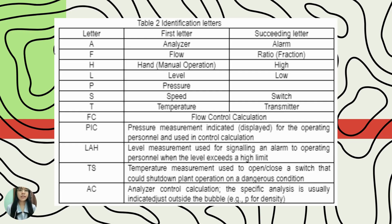Table 2 covers the identification letters. A has a first letter meaning analyzer, while the succeeding letter means alarm. F means flow for the first letter, while the succeeding letter means ratio or fraction. H for the first letter means hand or manual operation, while the succeeding letter means high. L means level for the first letter, while the succeeding letter means low. P means pressure. S has speed meaning for the first letter, while the succeeding letter means switch. T for the first letter means temperature, while the succeeding letter means transmitter. FC, PIC, LAH, TS, and AC have general combined meanings.